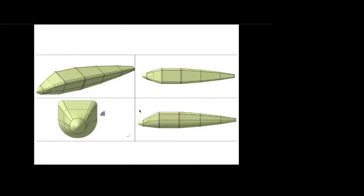So this is what we are going to make — a simple fuselage structure. We used only bulkhead and skin. I haven't used longerons and stringers, but you can include them later.